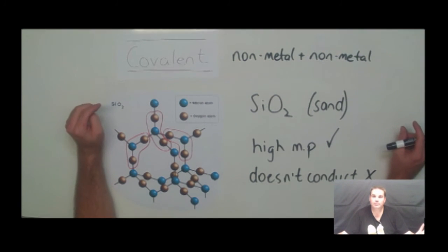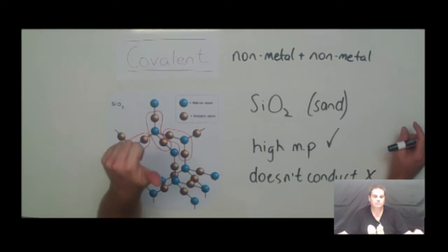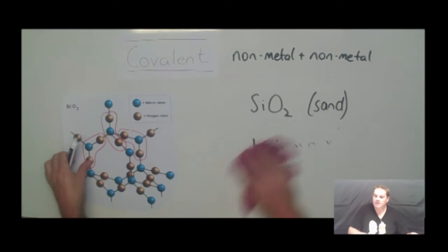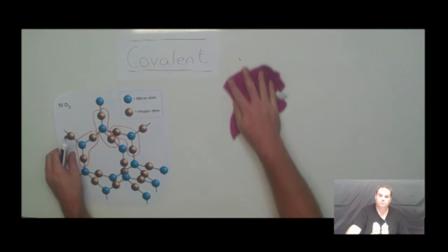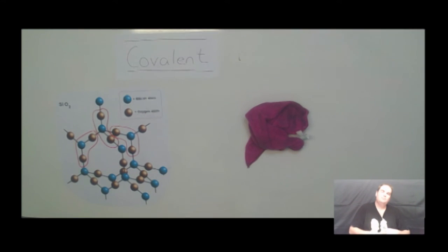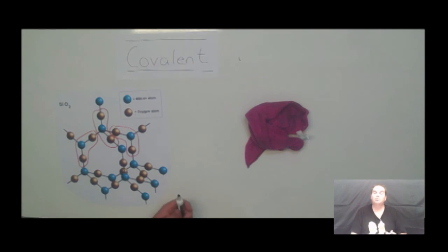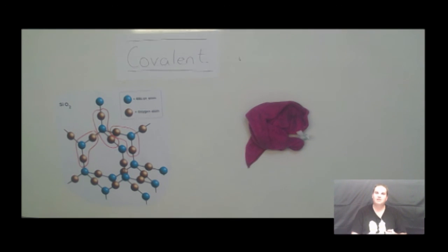So go back and have a look at the three different types of bonding: metallic bonding between metal and metal, ionic bonding between non-metal and metal, and covalent bonding between two non-metals. Make sure you understand about the different types of bonding, what effect it has upon the structure, and also upon its melting point, boiling point, and conductivity. I hope this has helped — if you have any further questions, just come and see me. Thanks, guys.